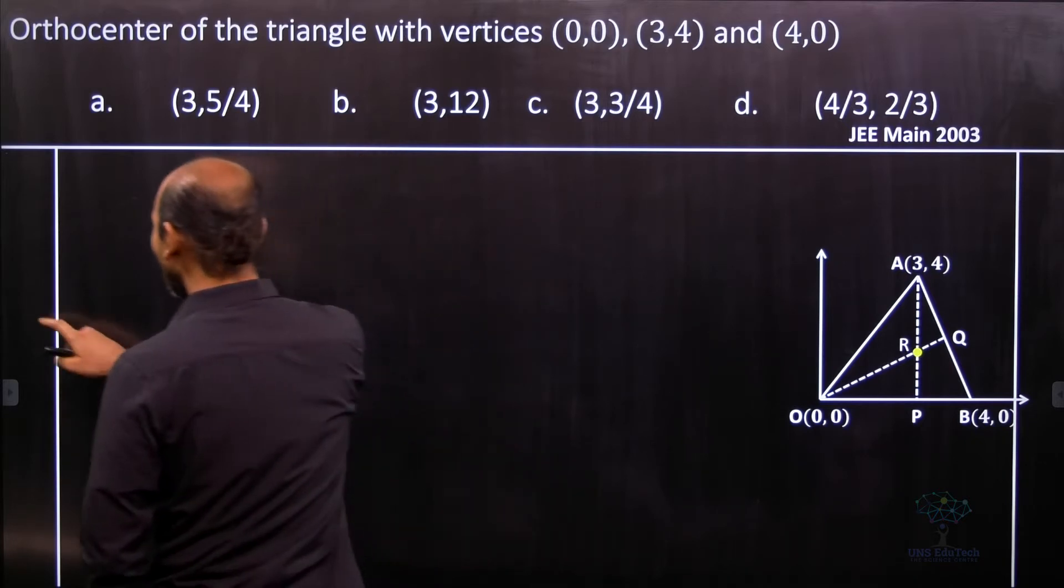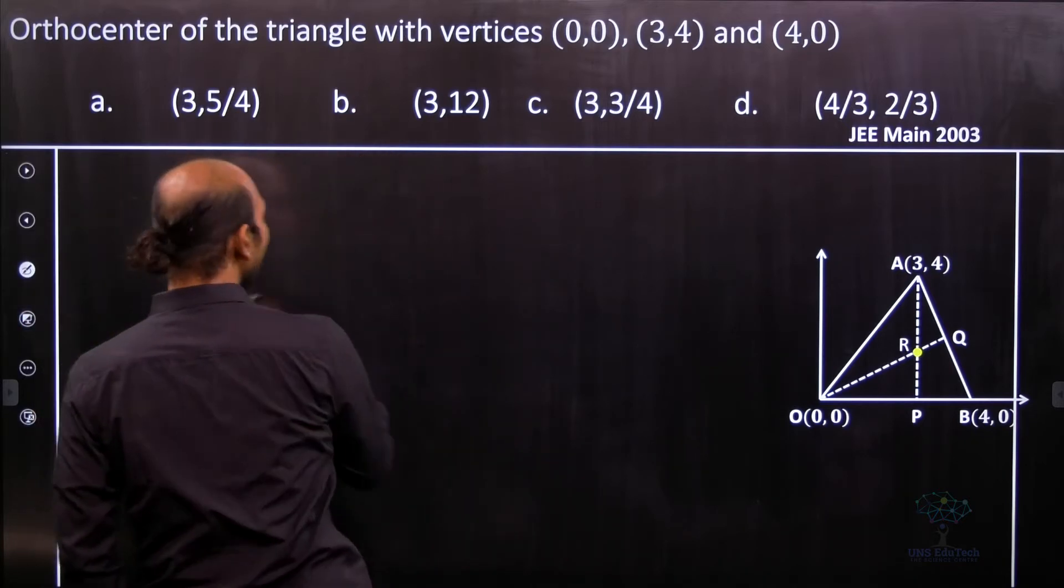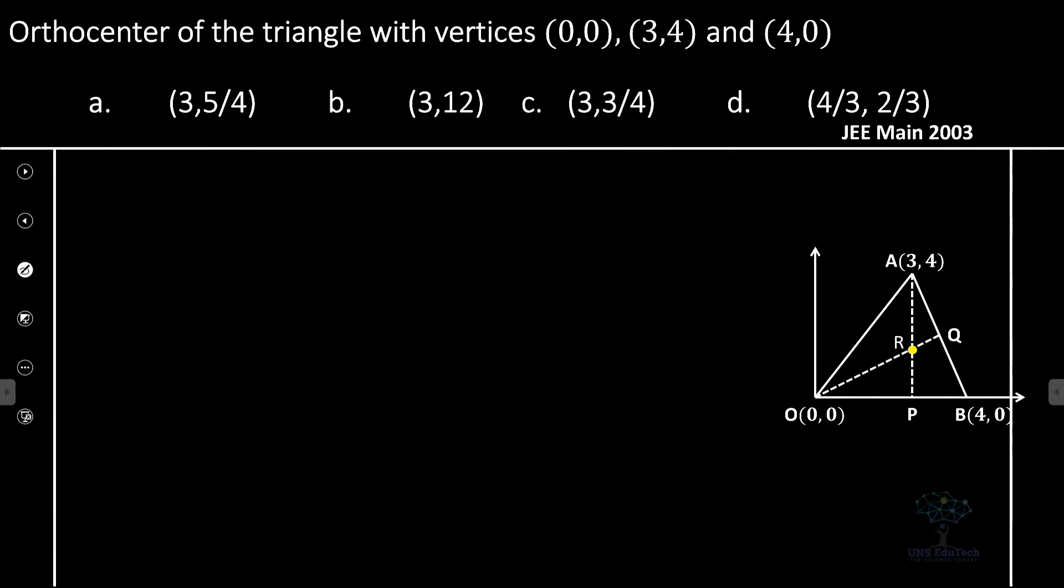So here we'll say that in this particular problem R be the orthocenter. So therefore by definition of orthocenter AP is definitely perpendicular to OB and OQ is definitely perpendicular to the line side AB. So that's the given condition.